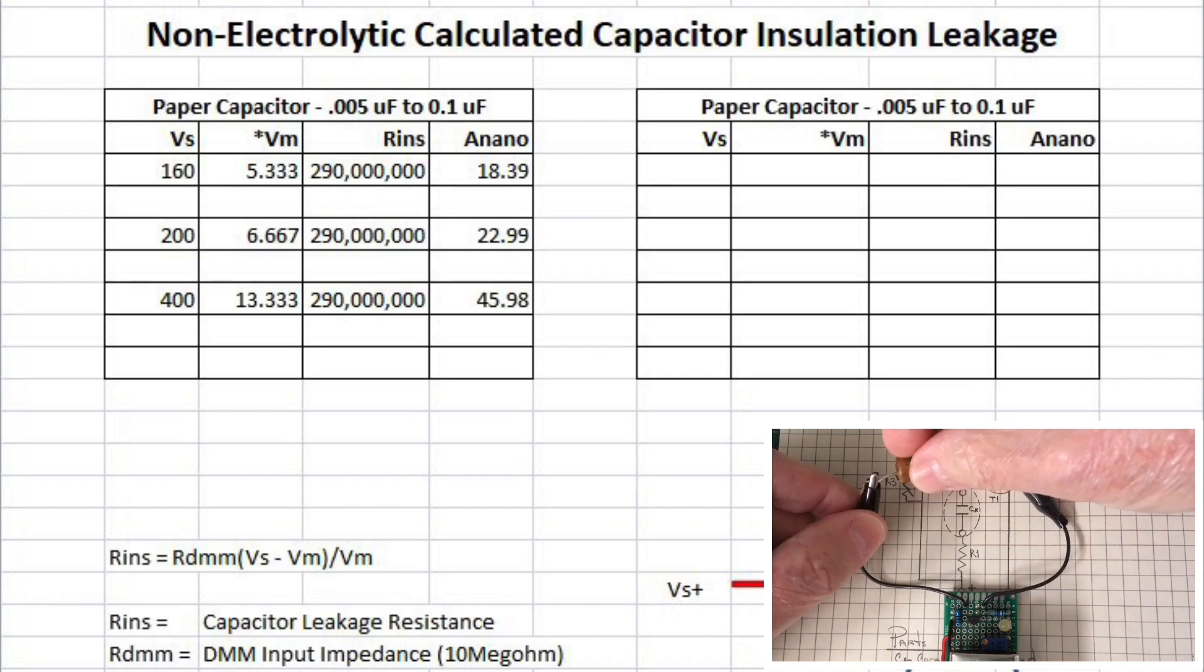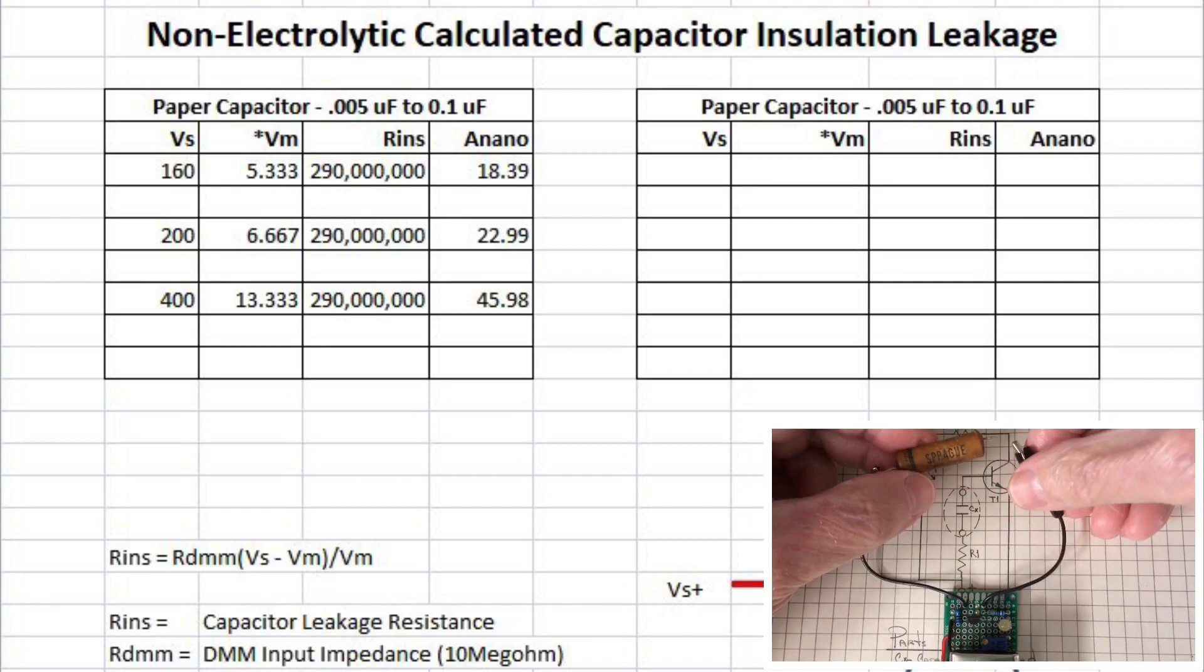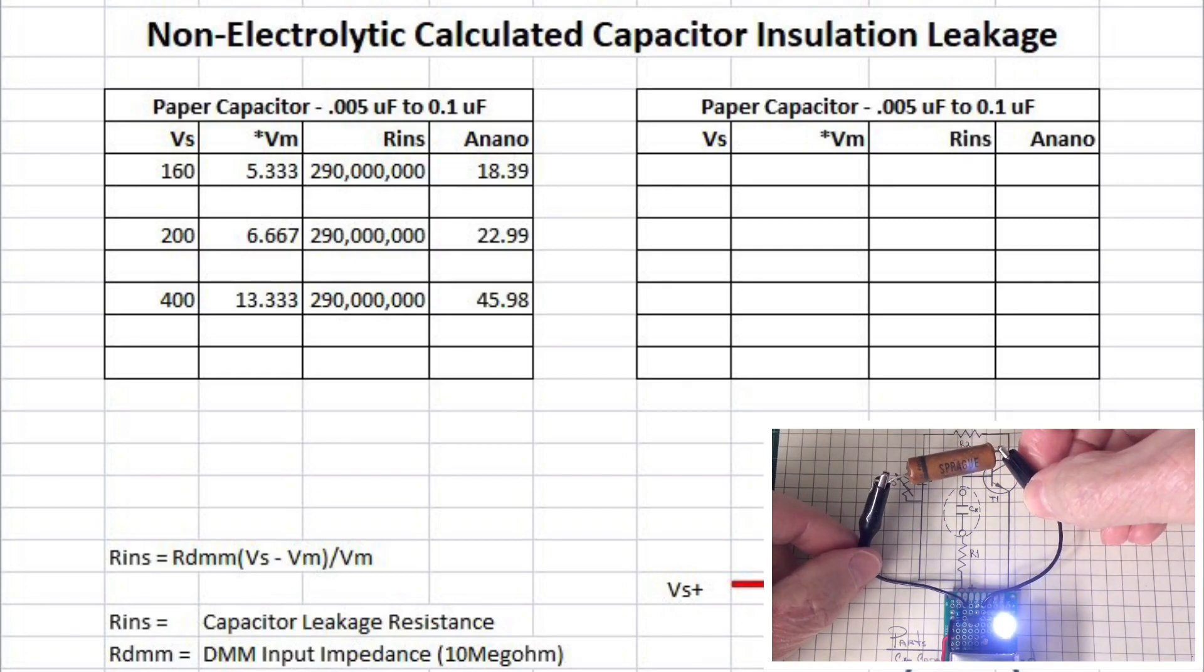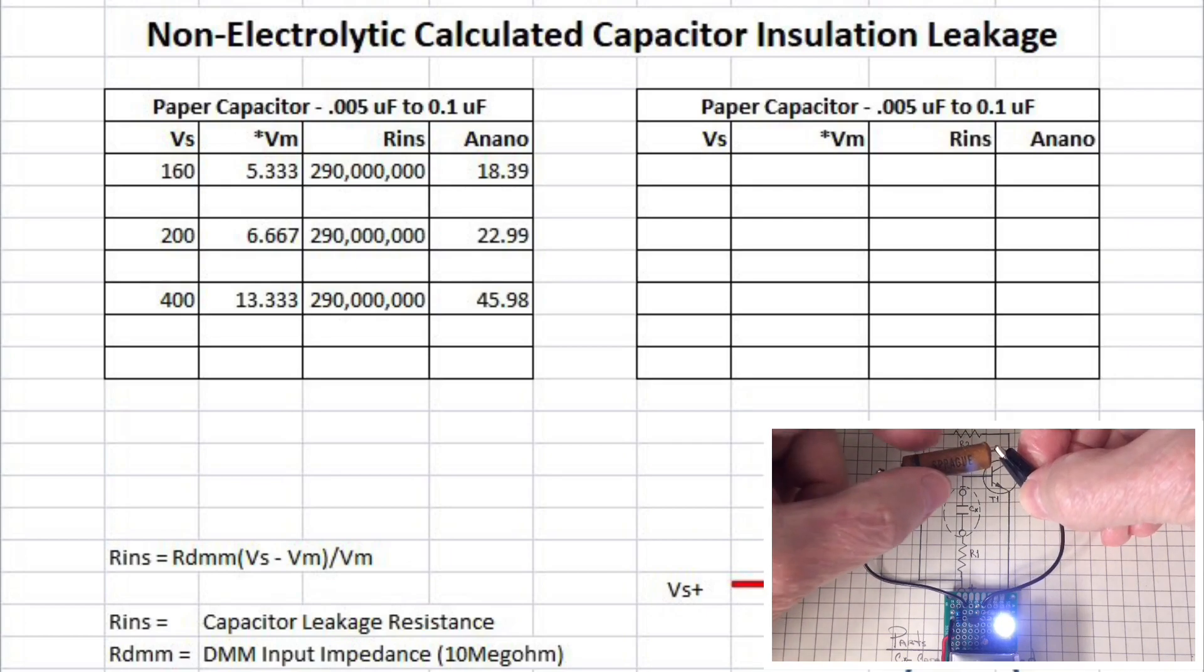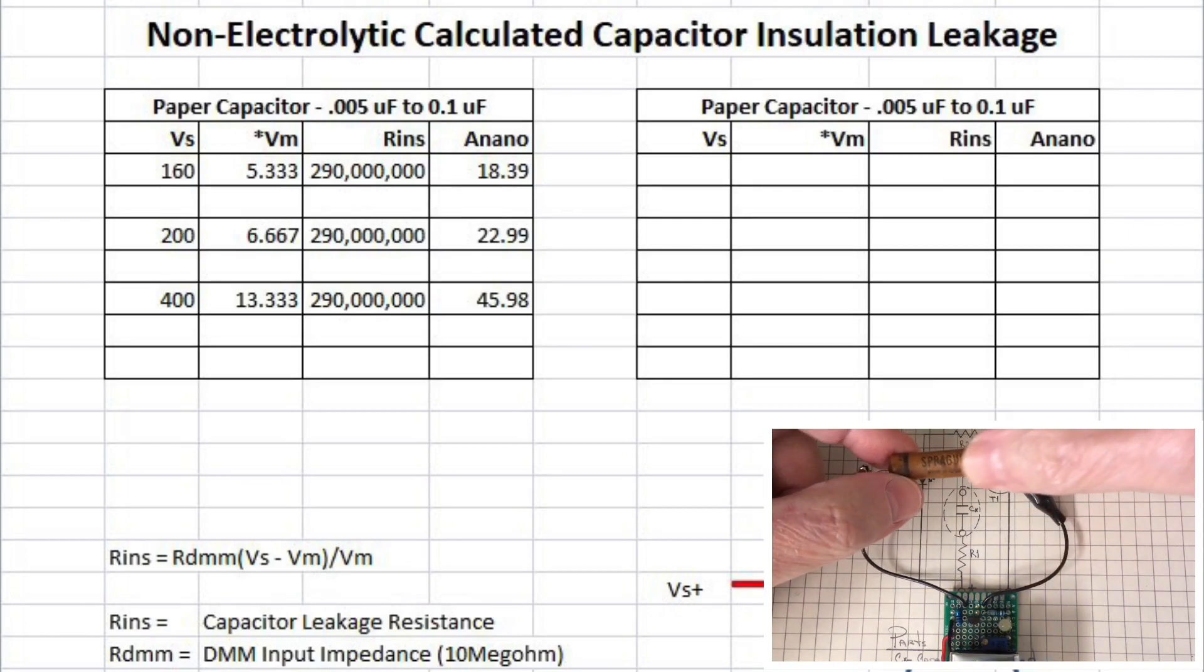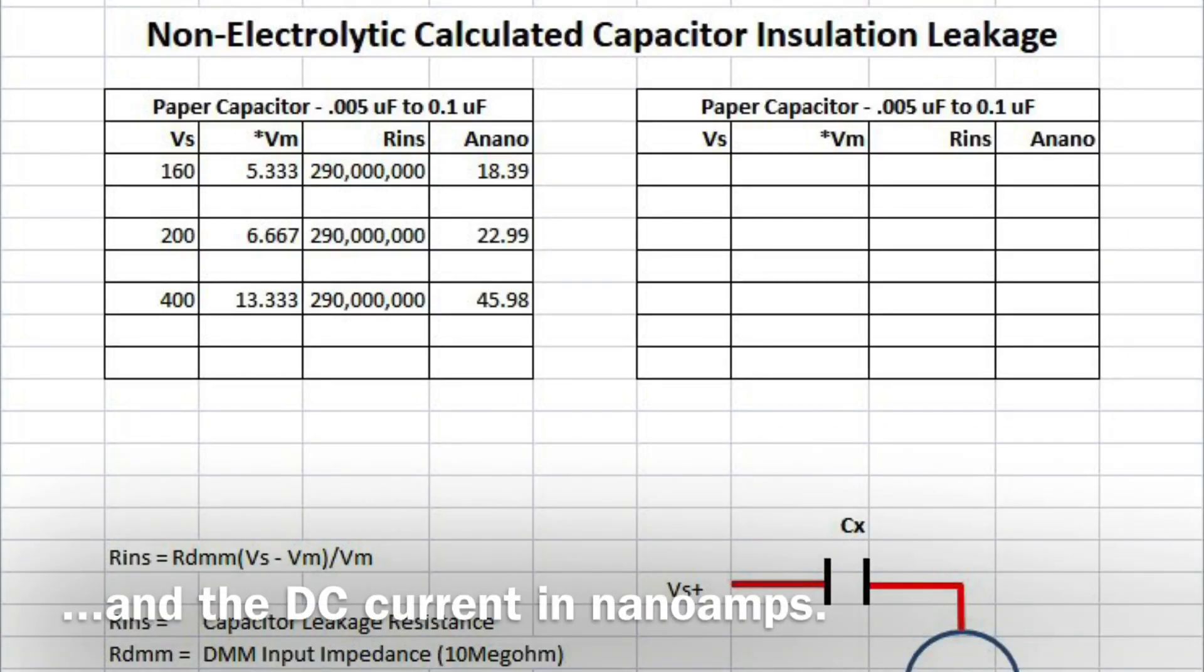You can see here in my Excel chart I put together, just playing some what-ifs. If the capacitor itself was rated at X voltage, you can see what the insulation resistance would calculate back to. So not very good numbers.